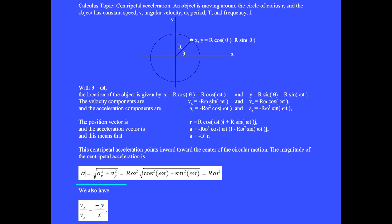The magnitude of the centripetal acceleration is found from the square root of a sub x squared plus a sub y squared. We can factor out the r omega squared and under the square root cosine squared plus sine squared is 1, so the magnitude of the acceleration vector is r omega squared.